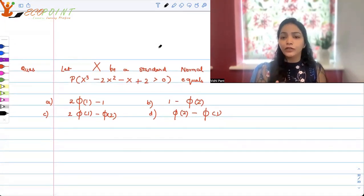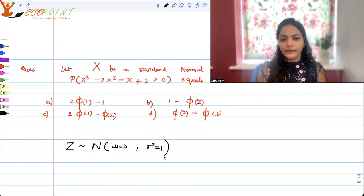Few things that you need to recall here. Standard normal distribution, basically what we call Z, is normal distribution with parameter mu = 0 and sigma² = 1. It's a bell-shaped distribution, symmetric around 0.